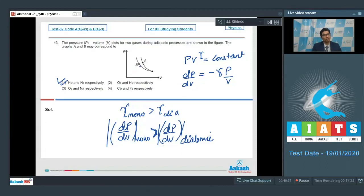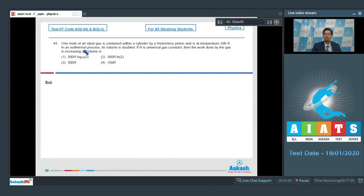Now let us proceed to question number 44. Question 44 says one mole of an ideal gas is contained within a cylinder by a frictionless piston and is at temperature 300 Kelvin. In an isothermal process, its volume is doubled. If R is universal gas constant, then the work done by the gas on increasing its volume is.